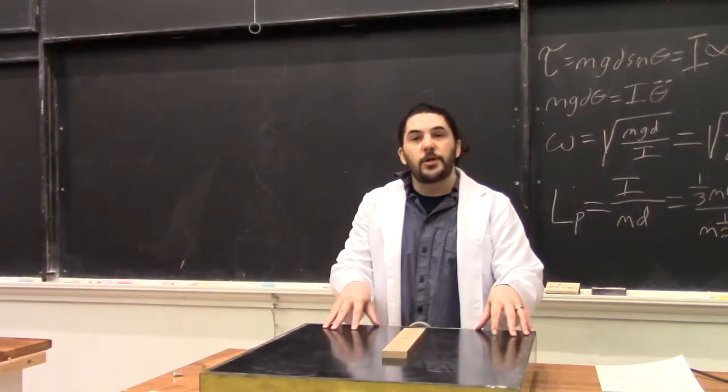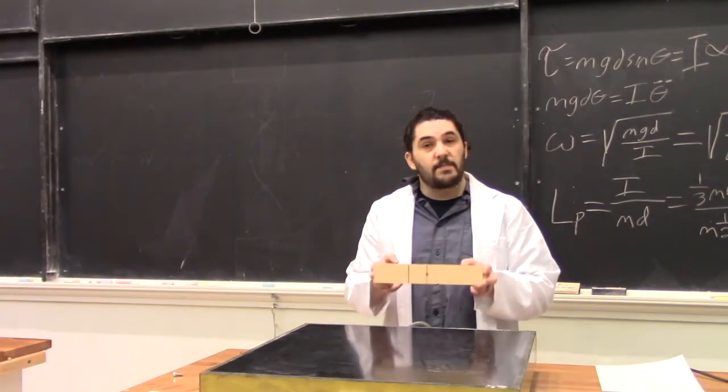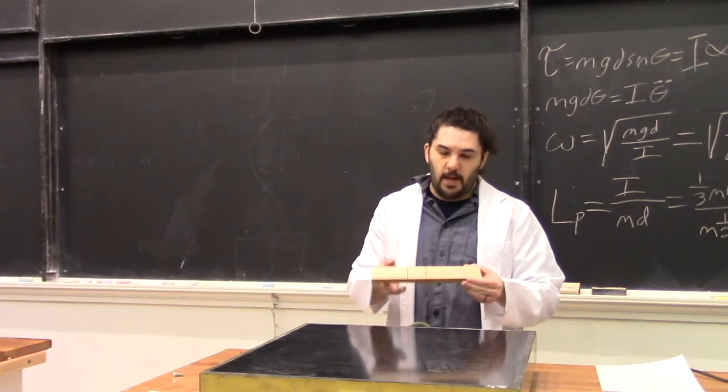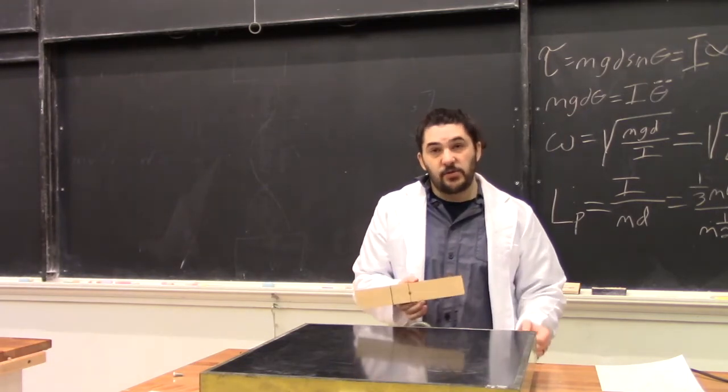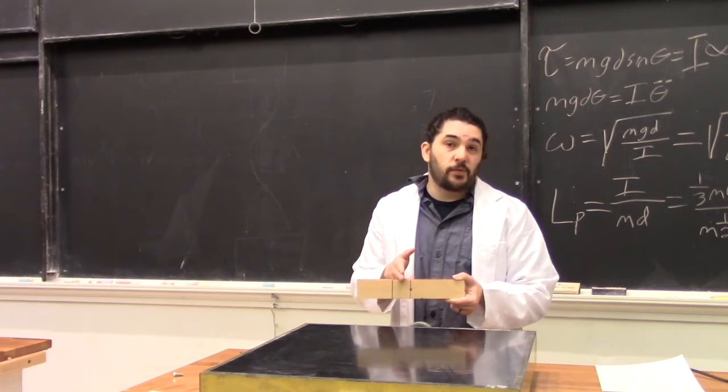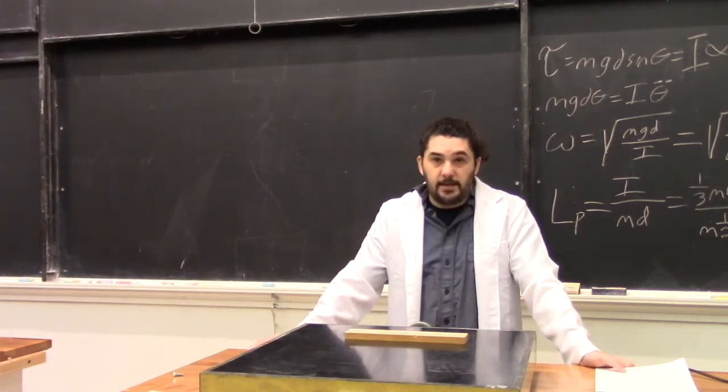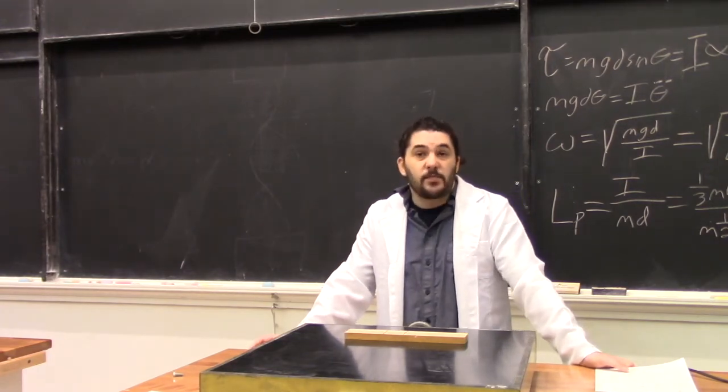Now we'll look at rigid body collisions on an air table. By imparting impulses to a similar rod, we can show what happens when we collide along the axis of symmetry, at the length of the equivalent simple pendulum, and at other points along the way. No matter where the rod is hit, the puck imparts momentum to it.